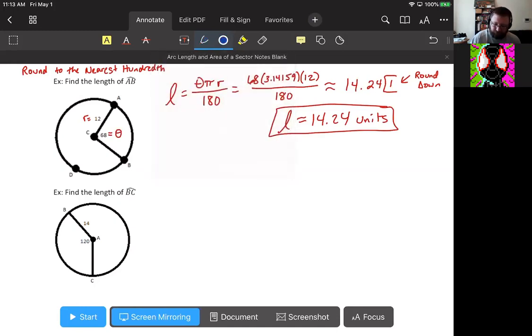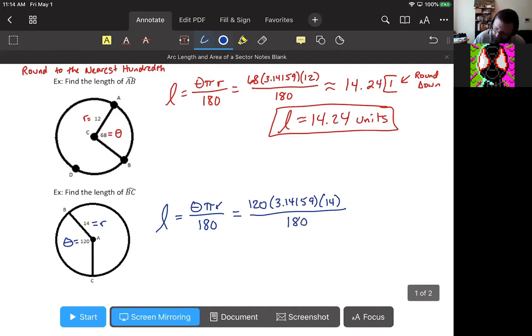Same thing for the next one. We're asked to find the arc length of BC. So we pull out our arc length equation, theta π r over 180. R is 14, theta is 120, so 120 times 3.14159 times 14 divided by 180. So we're going to be feeding it to the calculator. And we get 29.321. So again, that says round down.